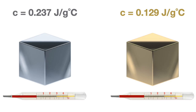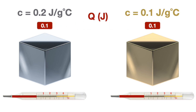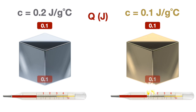Now, to demonstrate which mass will heat up faster, suppose we have the same two one-gram masses of silver and gold. We're going to round the specific heat of silver to 0.2 and the specific heat of gold to 0.1, and apply the same amount of energy to each mass. As each mass absorbs 0.1 joules of energy, only the gold increases by one degree Celsius — the silver does not. As they absorb another 0.1 joules, the gold increases by another degree Celsius. Finally, because silver now has a total of 0.2 joules of energy, it increases by one degree Celsius.